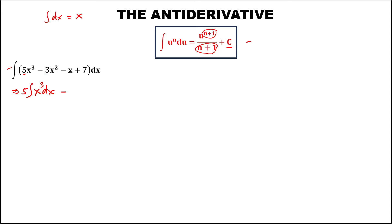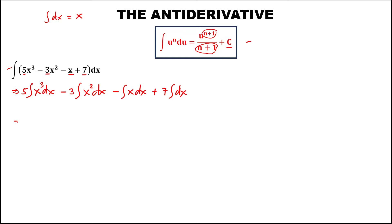Then minus: for this term, put the constant outside, then we have the integral of x to the power 2, then dx. Then minus, for this term, since there is no constant, this becomes the integral of x, then dx. And for the last term, plus — put the constant outside — then we have the integral of dx.